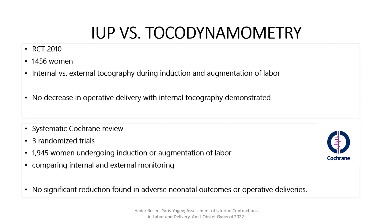A systematic Cochrane review of three randomized trials comparing internal versus external tocodynamometry was conducted, including 1,945 women undergoing induction or augmentation of labor. There were no reports of maternal or neonatal deaths. Neonatal outcomes did not differ significantly between groups, and there were no significant differences in the number of instrumental deliveries or cesarean delivery, use of analgesia, or time to delivery.